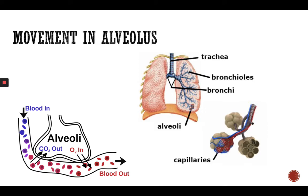Movement in the alveolus — while air passes through the trachea, bronchi, and bronchioles, at the end of the bronchioles we have the alveoli. They are enclosed with capillaries where the diffusion of gases actually happens. As you can see, carbon dioxide passes into the alveoli and is expelled, while oxygen gets into the blood through the alveoli and blood vessel membranes.